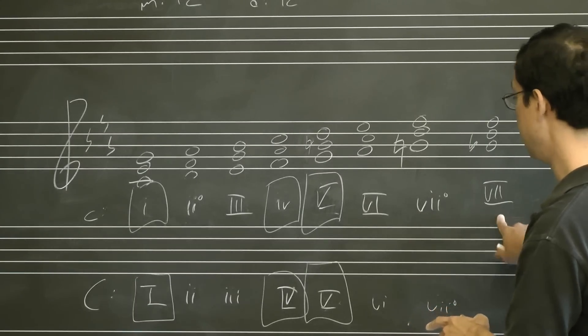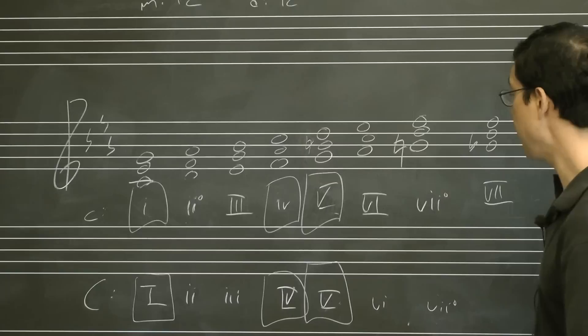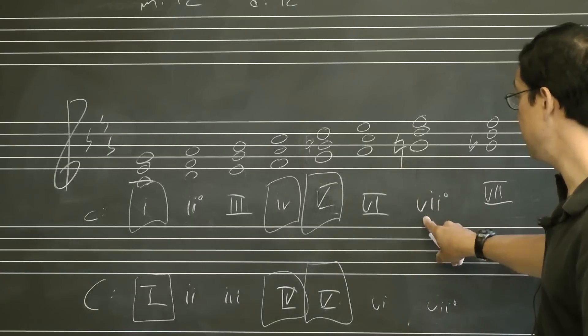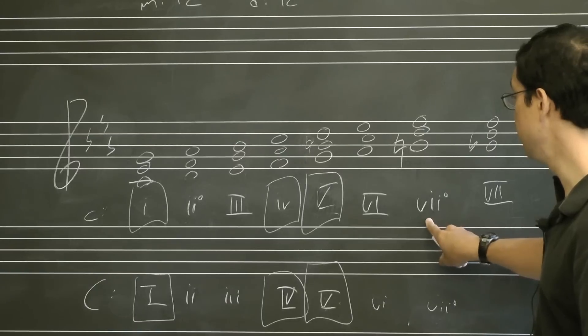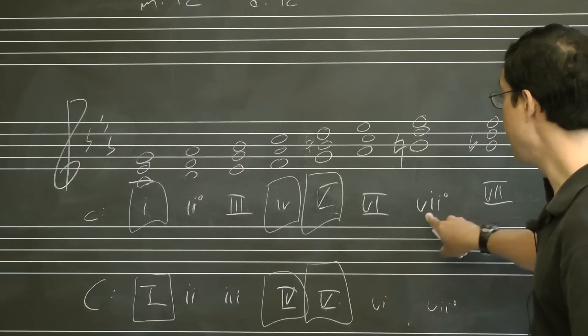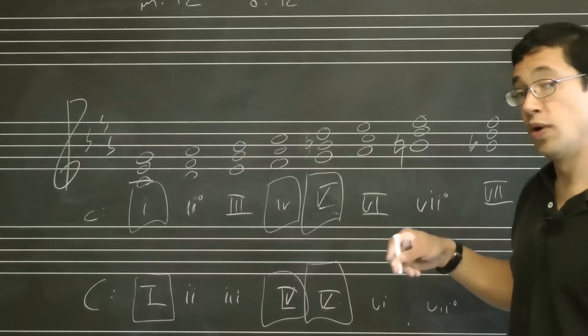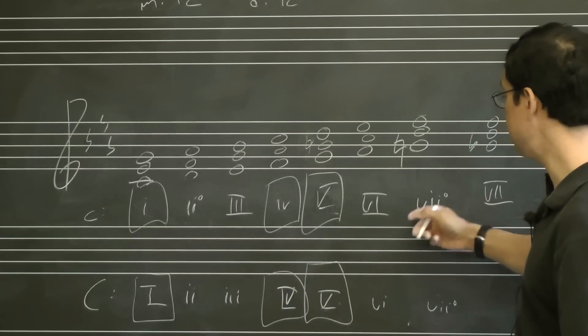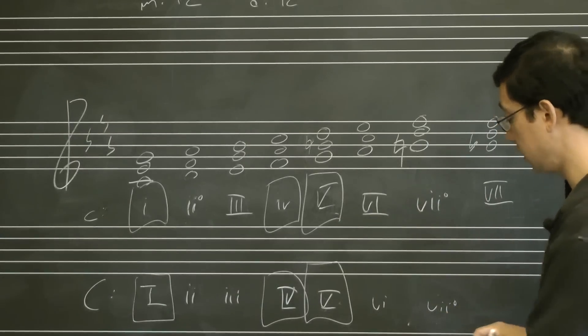So these both belong to the key of C minor. And we use these inflected Roman numerals, lowercase with the circle, uppercase here, to let us know which form of the scale we're using so we can see immediately what the quality of the chord is.